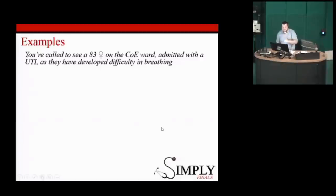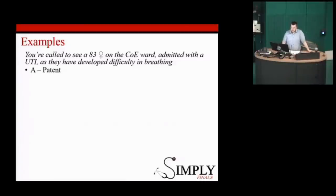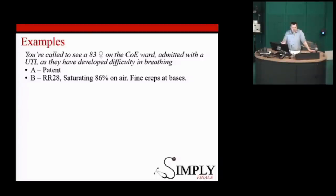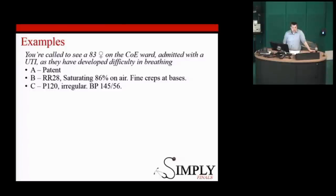You're called to see an 83-year-old lady on the care of the elderly ward. She's been admitted with a UTI and developed difficulty breathing. She's talking to you, so the airway is patent. Breathing: she's tachypneic, desaturating on air, with fine crepitations at the bases. Circulation: she has an irregular fast pulse. We need to get an ECG to determine the underlying rhythm — it might be contributing to her symptoms.